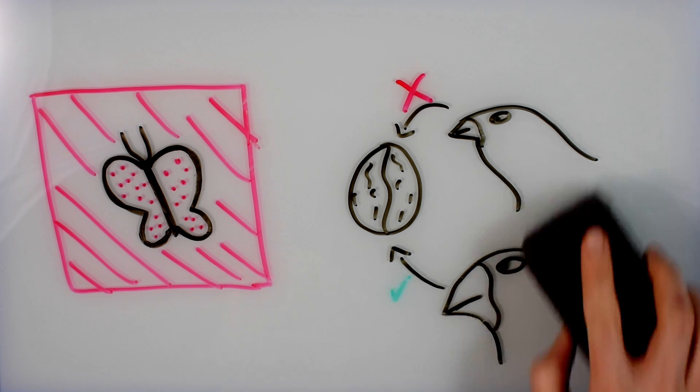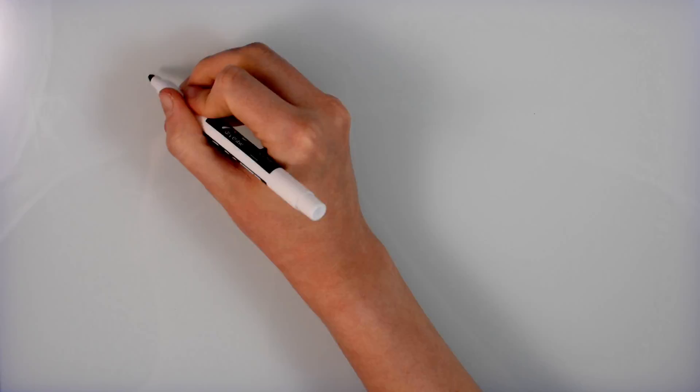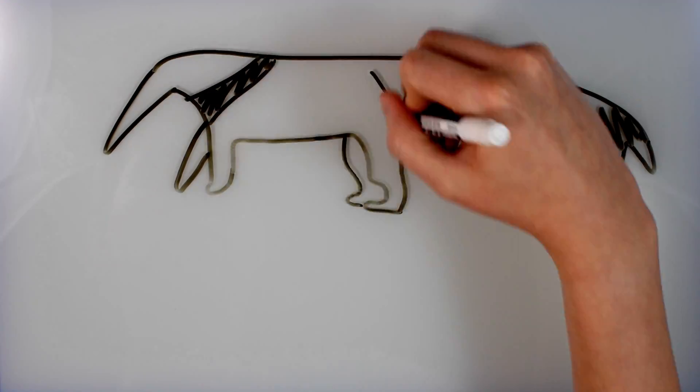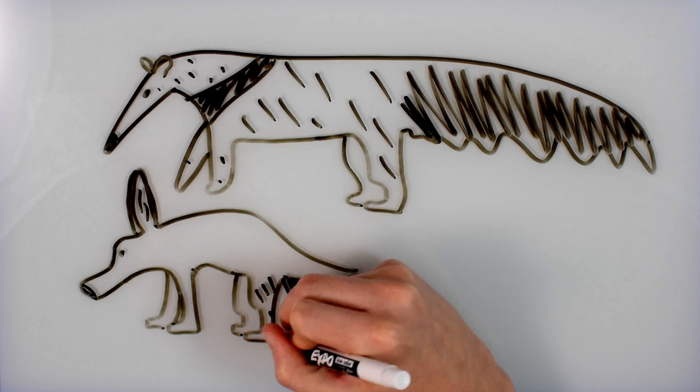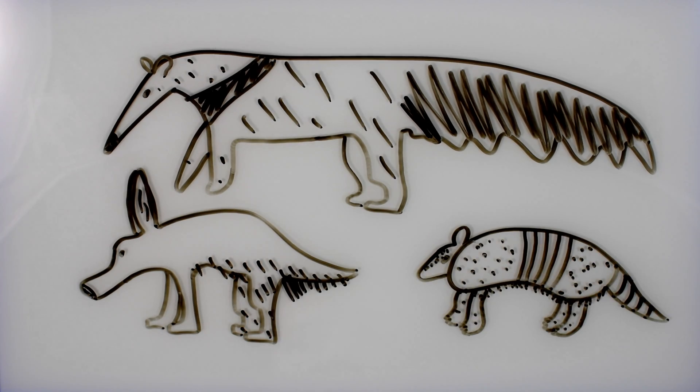Not every physical trait shares the same kind of genetic basis. An example is anteaters, aardvarks, and armadillos. They all have sticky tongues for catching ants even though they aren't closely related species. This is called convergent evolution.